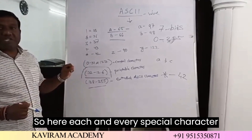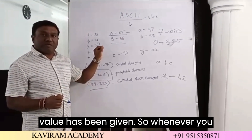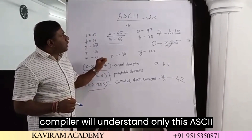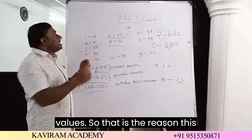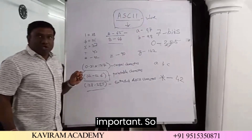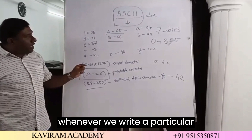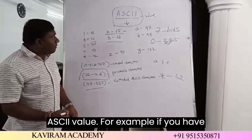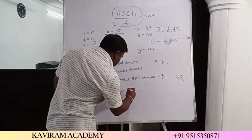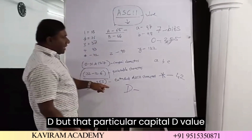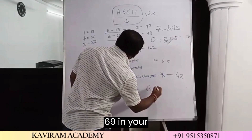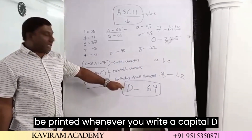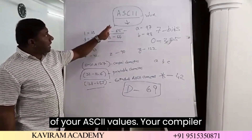Each and every special character as well as a regular character has been given a special ASCII value. Whenever you execute your program, your compiler will understand only these ASCII values. That is the reason this ASCII concept is very much important in C language. Whenever we write a particular character in your program, the compiler understands only the particular ASCII value. For example, capital D has been assigned the value 69 in ASCII, so 69 will be used whenever you write a capital D in your program. This is the concept of ASCII values.